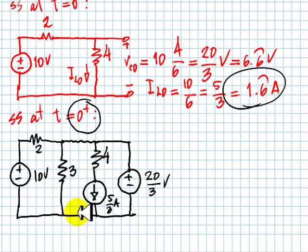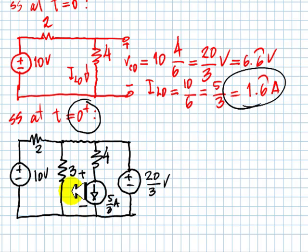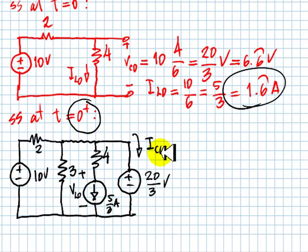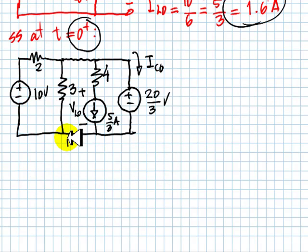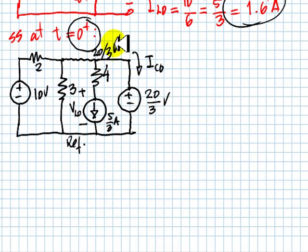Now we can solve the circuit. The two parameters we find: we know the current in the inductor, so we compute the voltage in the inductor — VL0. We know the voltage in the capacitor, so we compute Ic0, the current in the capacitor at zero plus. This is our reference. The node at the top is 20 thirds of a volt.